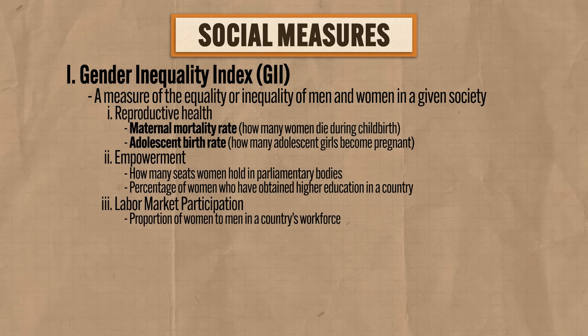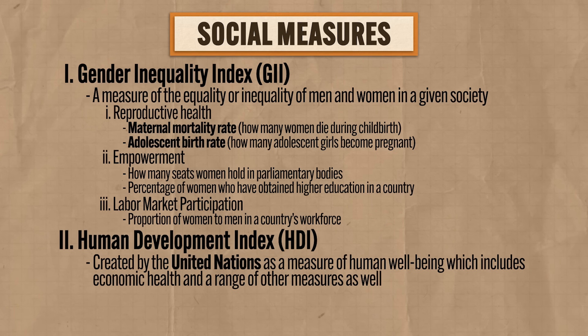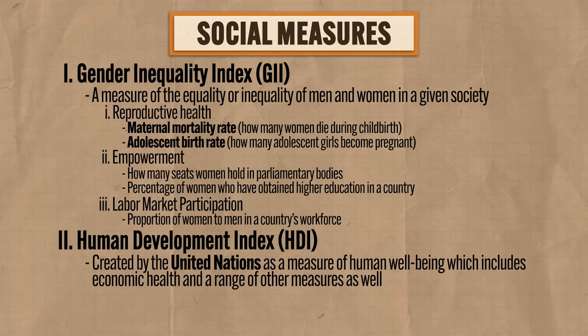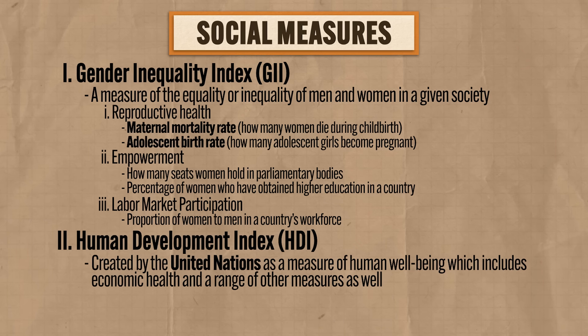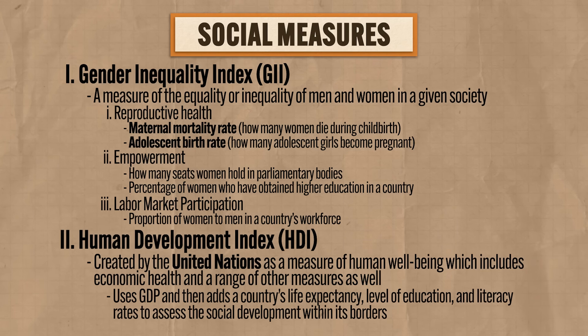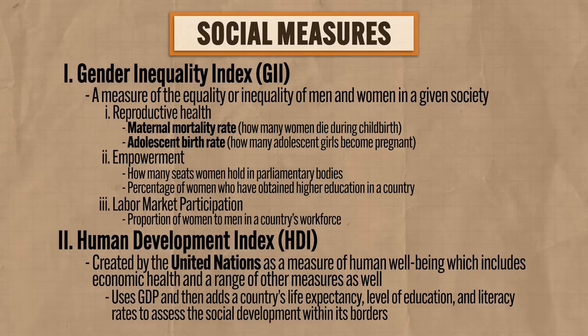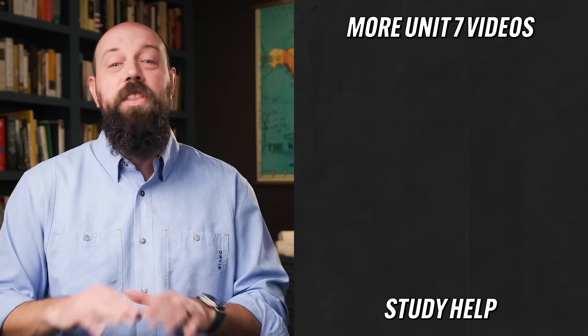The second social measurement of development is called the Human Development Index, or HDI, created by the United Nations. It is a measure of human well-being that includes economic health and a range of other measures. The idea is that good economies open up more choices for people, and when they have more choices they invest in things that improve their well-being, like education and healthcare. The HDI uses GDP and then adds a country's life expectancy, level of education, and literacy rates to assess social development — making it a more holistic measure that includes important parts of all the other measures discussed.